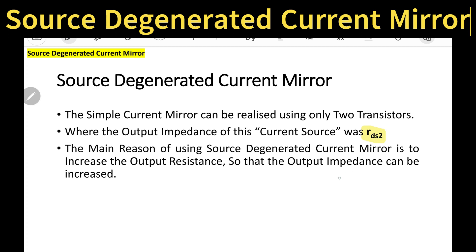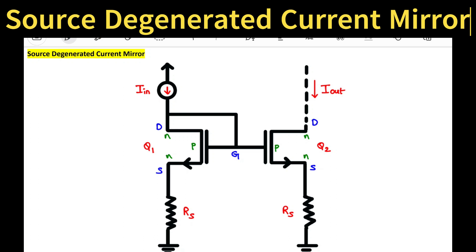Now suppose if I want to increase the output impedance, I will go for this particular concept. This is the circuit diagram for source degenerated current mirror, which is the same as the simple NMOS current mirror, but here I am making use of two extra resistances RS — one here and one more RS here. So simply, in order to increase the output resistance, I am adding two resistors at the source part.